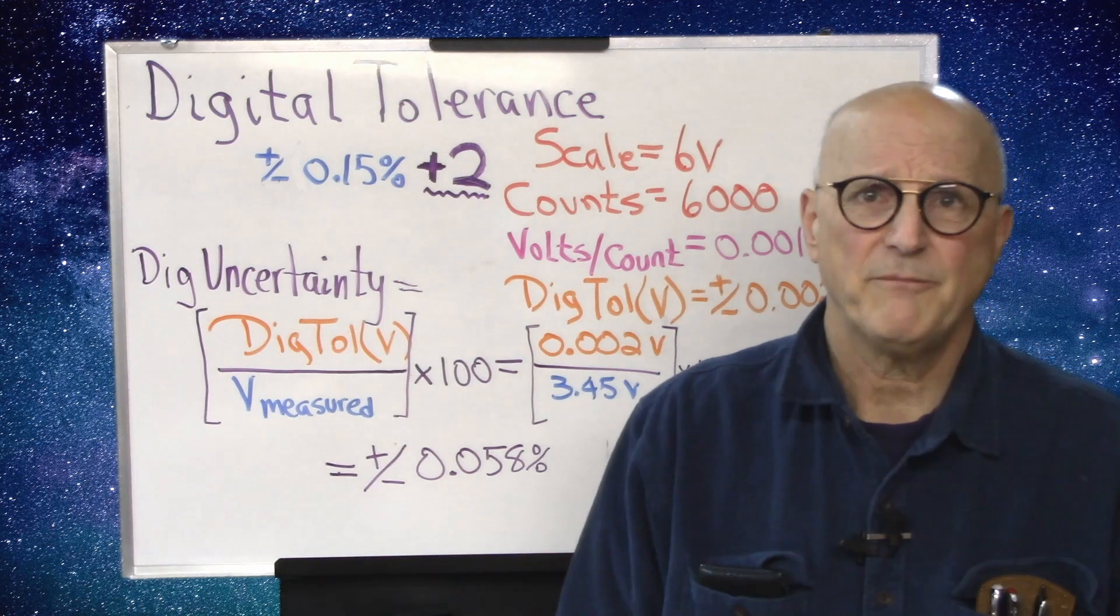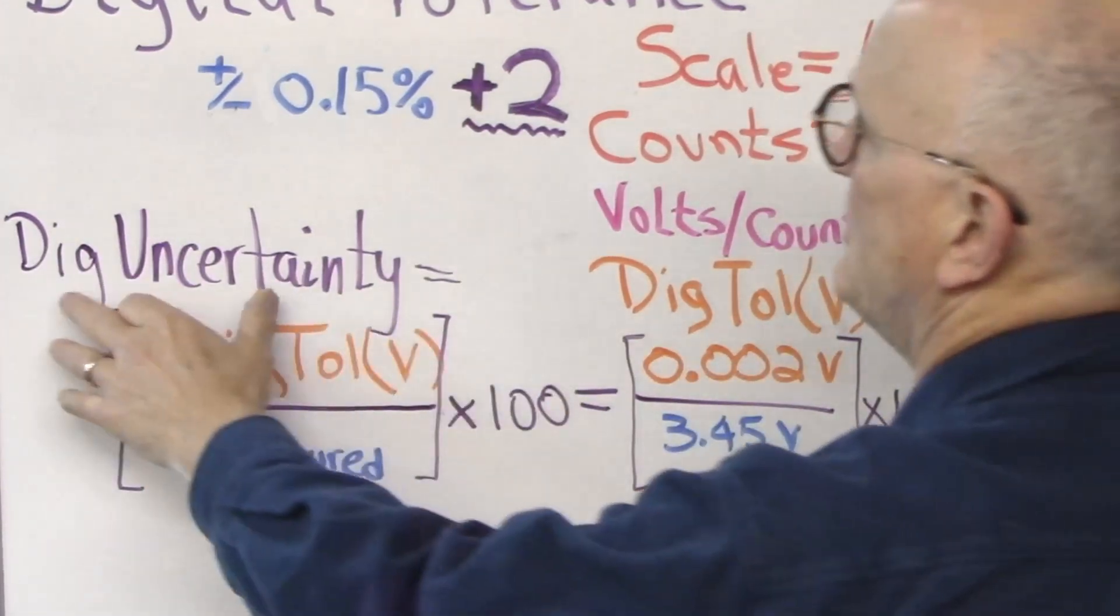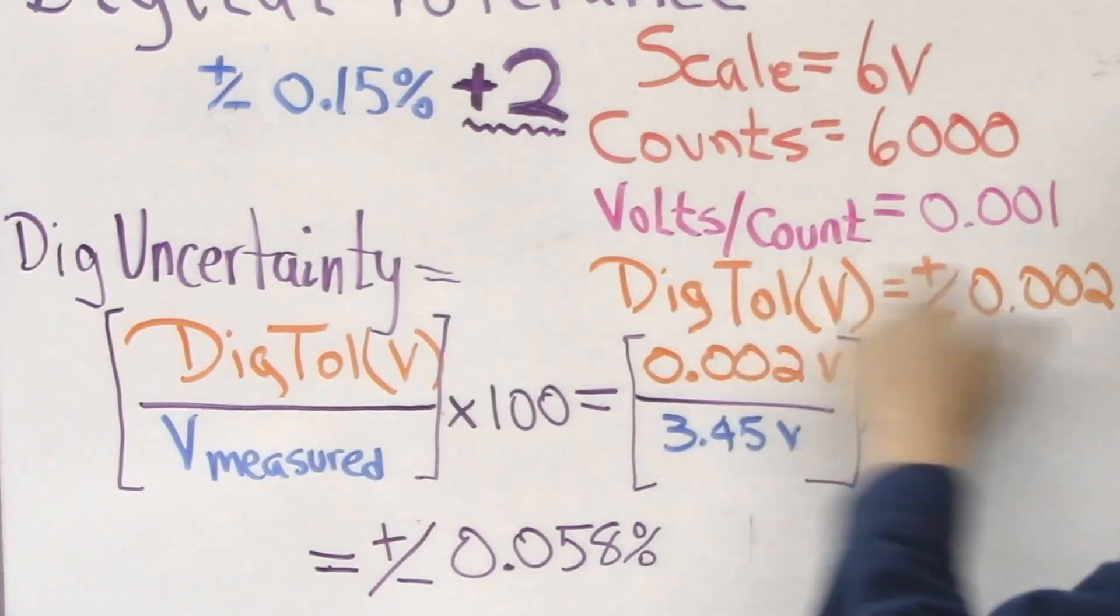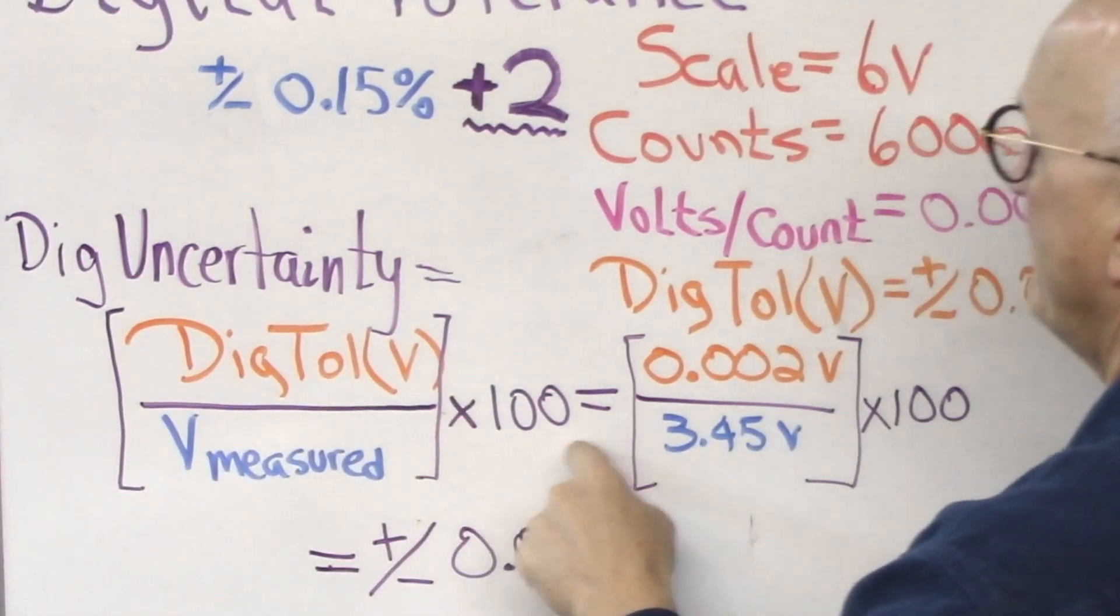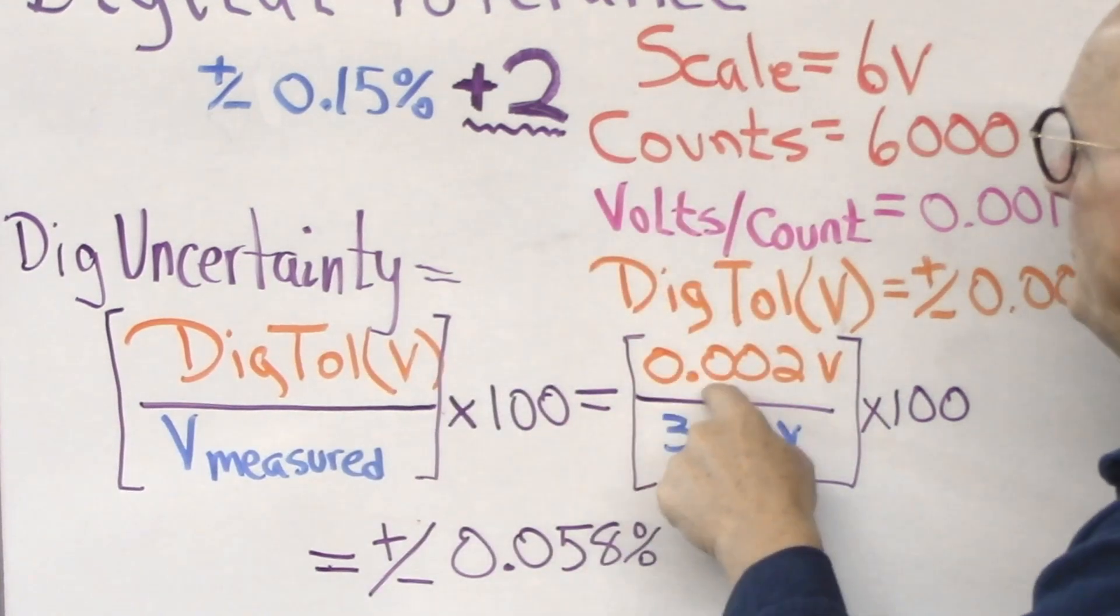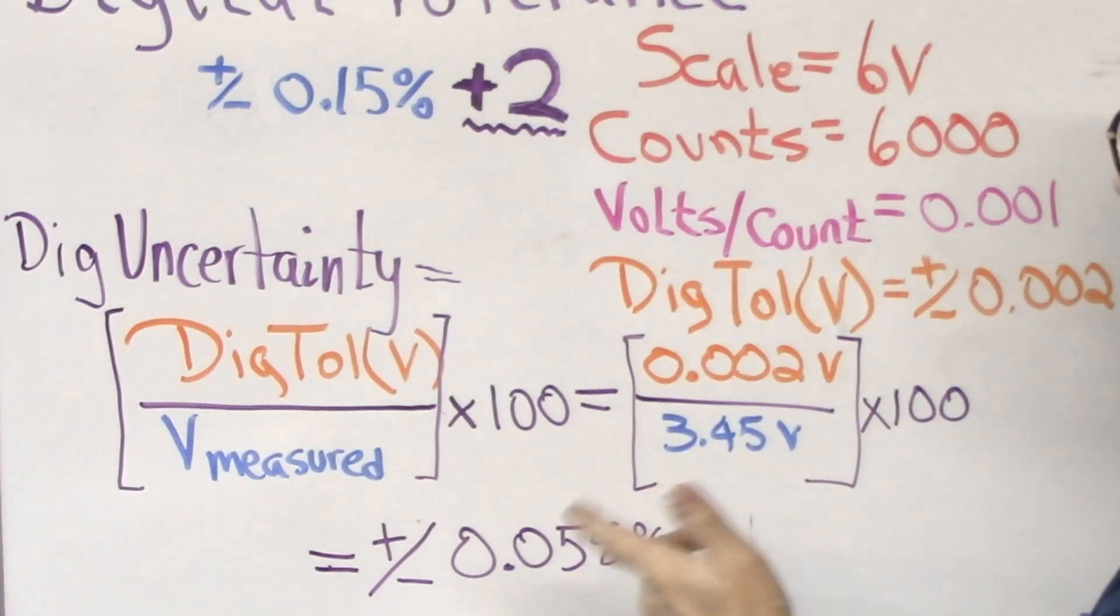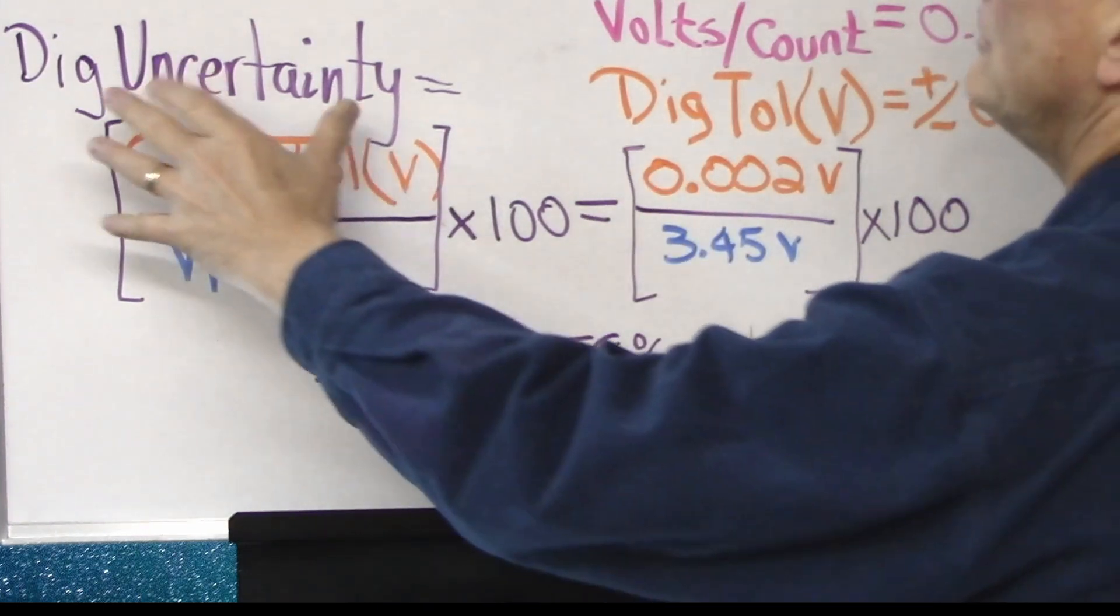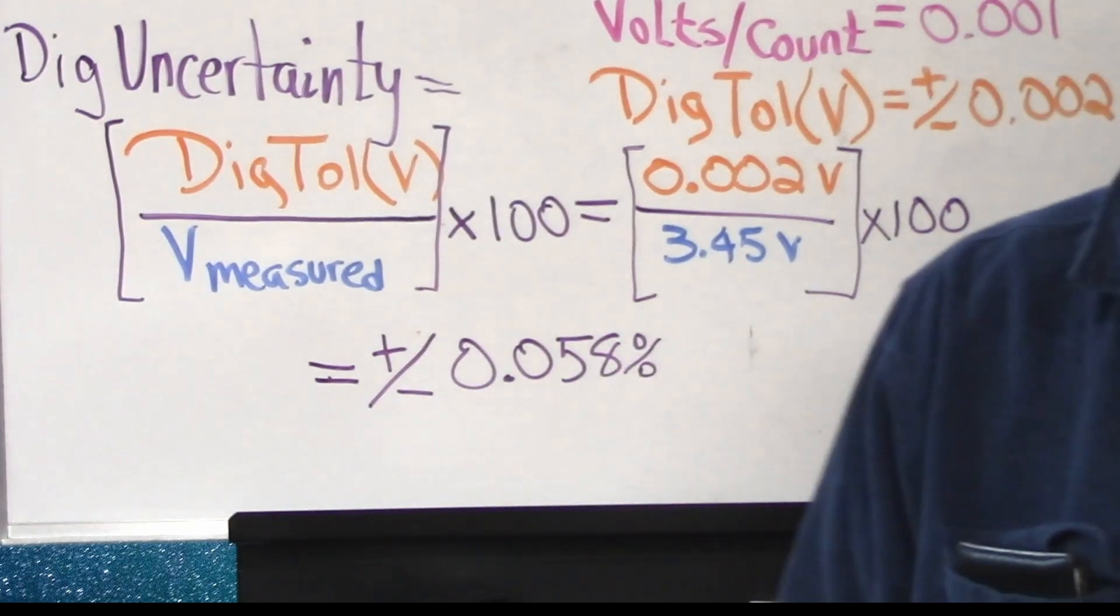Now how does this work out in percentage for the signal in question? We just calculated that we have a 0.002-volt possible error on the 6-volt scale for any voltage we measure on this scale. We're measuring a 3.45-volt signal. To find the total uncertainty in our measurement due to the digital tolerance, we take the digital tolerance voltage that we just calculated, and we divide it by the actual voltage that we're measuring. We take that whole thing, multiply it by 100. So in this case, we have 0.002 volts divided by 3.45 volts, multiply by 100. We discover that our tolerance due to the digital uncertainty is plus or minus 0.058%.